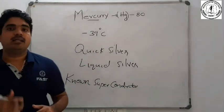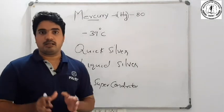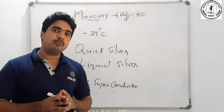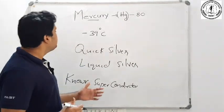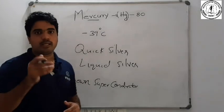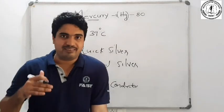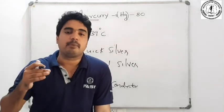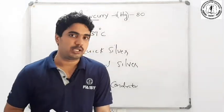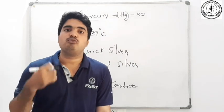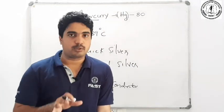Superconductivity was discovered by Kamerlingh Onnes. Mercury becomes a superconductor at 4.2 Kelvin. At the temperature of 4.2 Kelvin, Mercury is the first discovered superconductor.